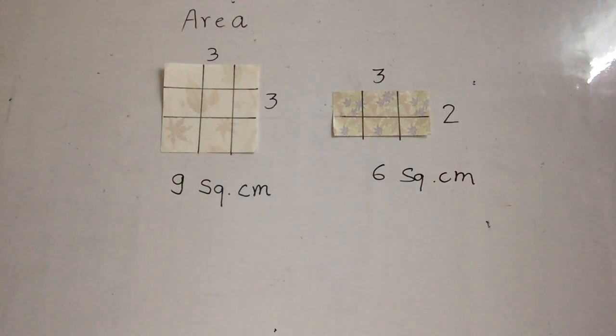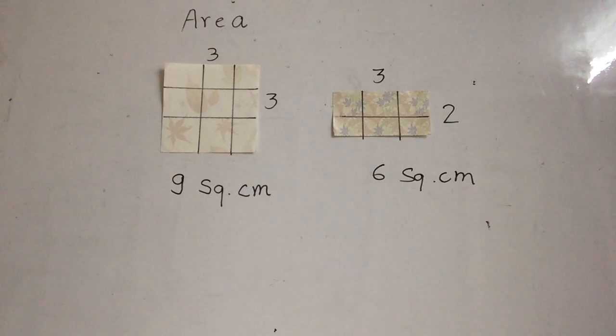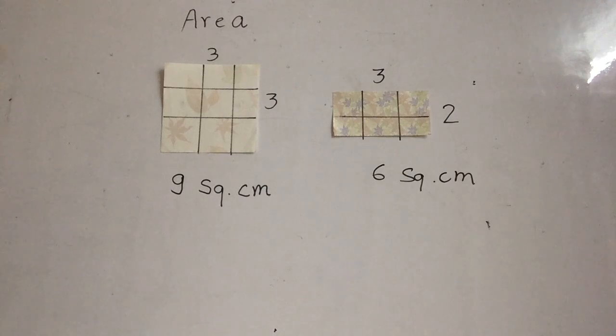In this way we can find the area of any rectangular shape and square shape. But we cannot count the square boxes all the time.